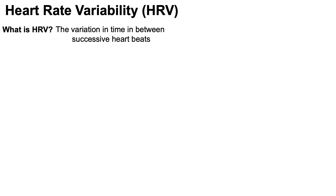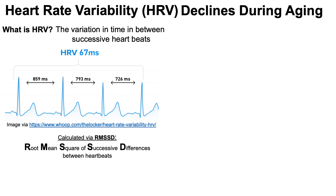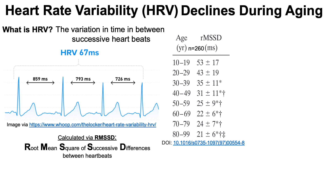My fitness tracker measures heart rate variability with the RMSSD — the root mean square of successive differences between heartbeats. RMSSD declines during aging. In a study of about 260 subjects, the RMSSD starts at about 53 milliseconds in young subjects aged 10 to 19, and slowly declines for each age group until 80–99-year-olds have a heart rate variability of 21 milliseconds — a significant decrease with age.